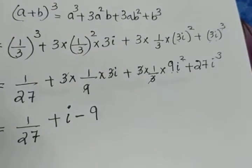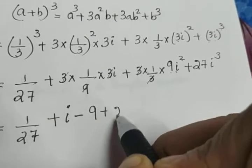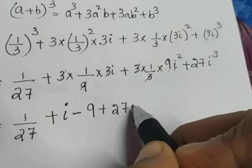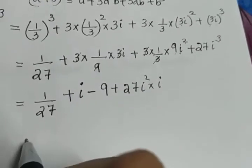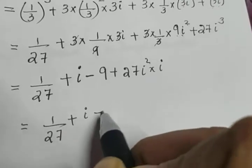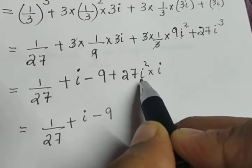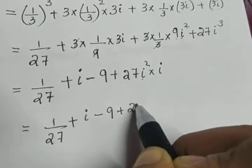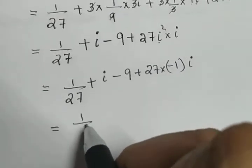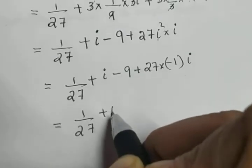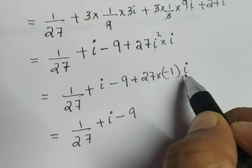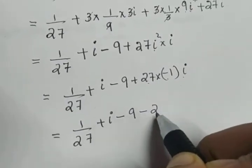So we have 1 by 27 plus i minus 9 plus 27 into i cubed. Instead of i cubed, we write i squared into i. Since i squared is negative 1, this becomes 27 into minus 1 into i, which is minus 27i.